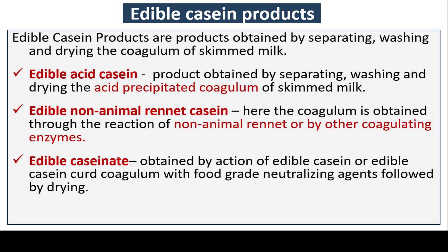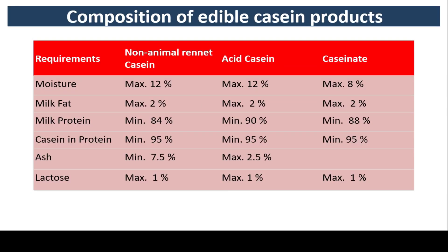Edible casein products are products obtained by separating, washing, and drying the acid-precipitated coagulum of skimmed milk — that is known as edible acid casein. Edible non-animal rennet casein: the coagulum is obtained through the reaction of non-animal rennet or other coagulating enzymes. Edible casein is also obtained by action on the edible casein curd coagulum with food-grade neutralizing agents, followed by drying.